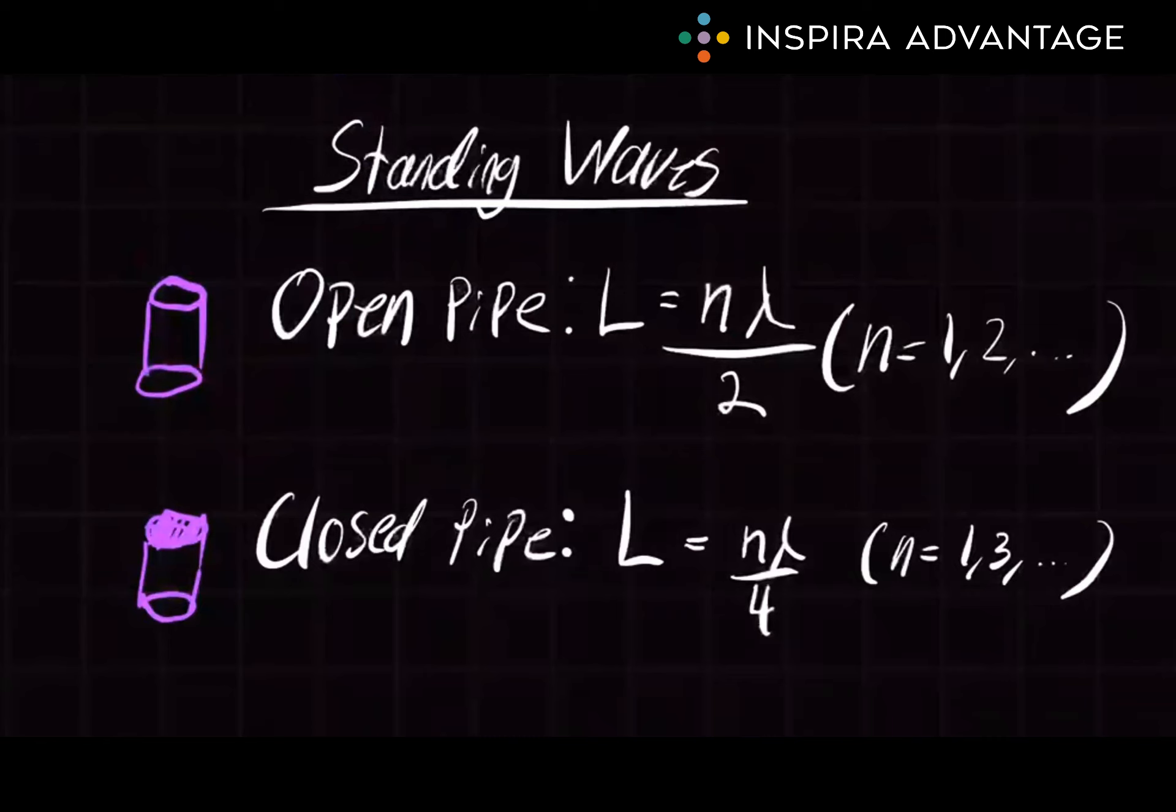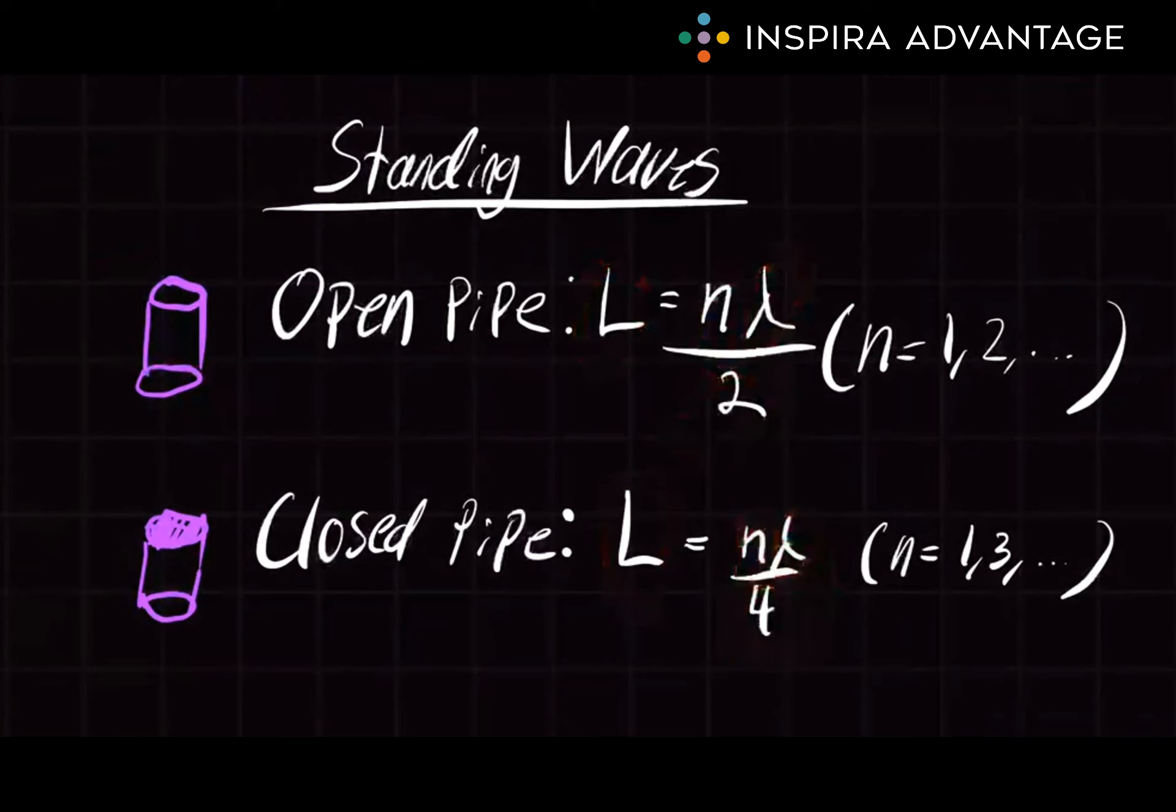Finally, let's talk standing waves and strings and open pipes. For example, a plucked guitar string vibrates in a way that creates a wave that appears to stand still. The length of this vibrating part of the string is equal to the whole number multiple of half the wavelength of the wave. This relationship can be expressed by the following formula, where L equals N times lambda over 2. In contrast, pipes that are closed at one end, like an organ pipe, support standing waves where the length of the pipe is equal to an odd number of quarter wavelengths. We express this by saying the length equals N times lambda over 4, and N can only be an odd number: 1, 3, 5, 7, and so on.